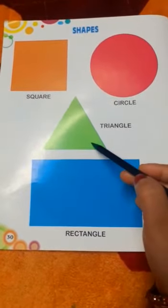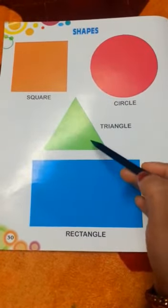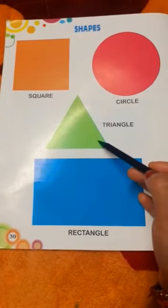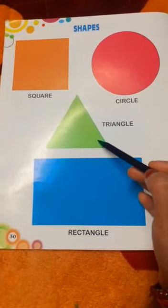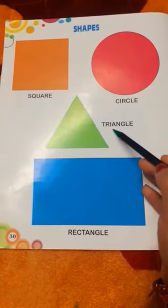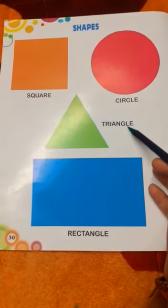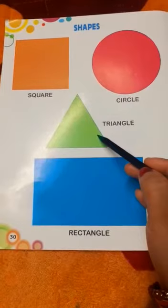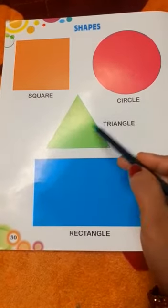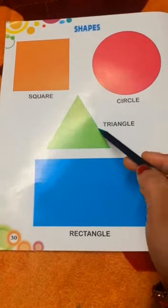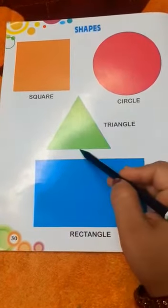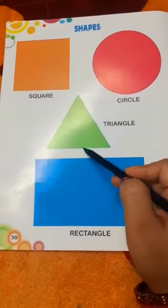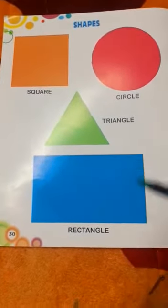This is a triangle. What is the spelling of triangle? T-R-I-A-N-G-L-E, triangle. Children, it has three sides: one, two, three. It has three sides. Now, next step.